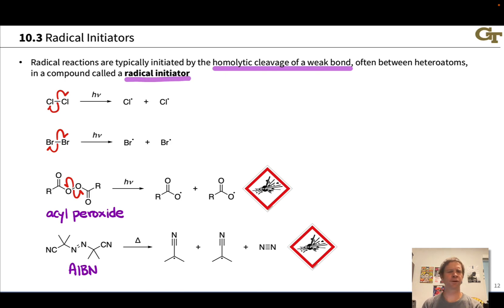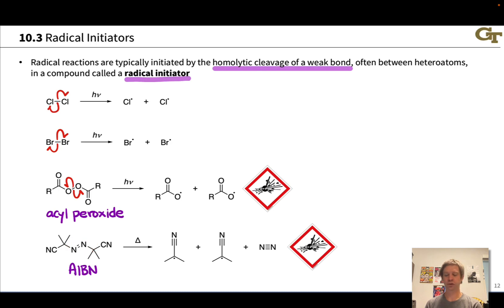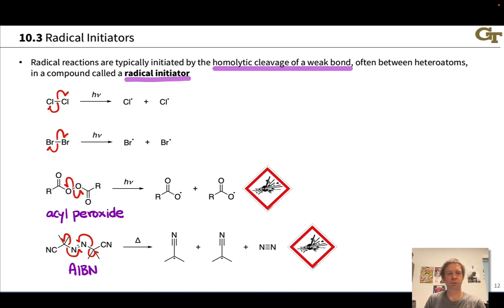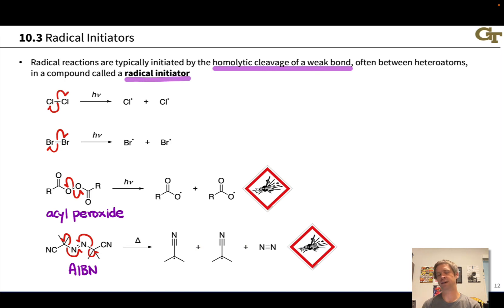One that we often use in practical organic chemistry is AIBN. AIBN has a central N-N group that can actually form N2 gas upon homolytic cleavage of the carbon-nitrogen bonds on either side of that central N-N double bond linkage. Under the influence of heat, electron flow like this generates N2 and carbon radicals, which are resonance-stabilized, and these can kick off radical reactions.